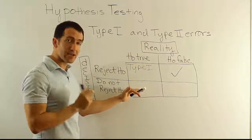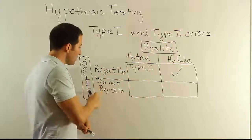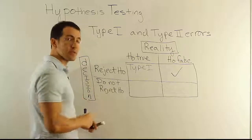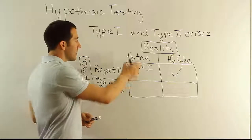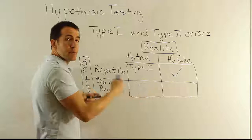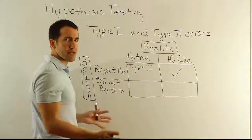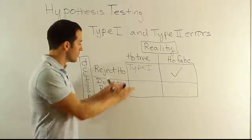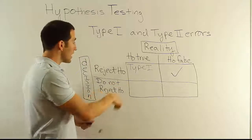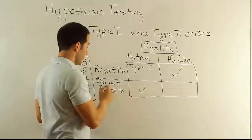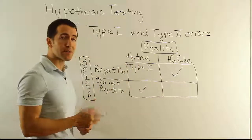Alright, here H0 is true, it's actually true, but we do not reject it. Well, I would say in that case if it's true and we don't reject it, that's a good thing. If it's a true statement, we should not reject it, we should not throw it out. If it's true we should keep it. And the fact that we do that here, that's good. Since we do not reject it and it's true, that's a correct decision.